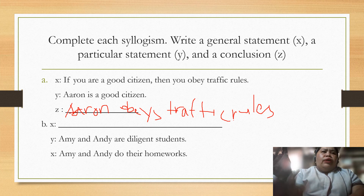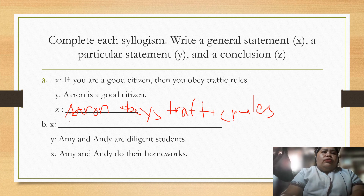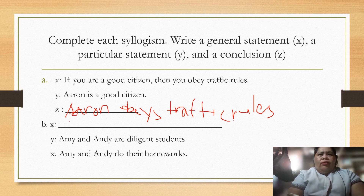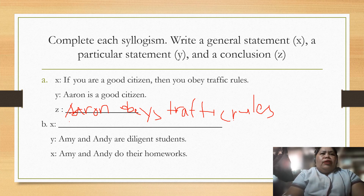Here in example B, Amy and Andy are diligent students — that is the particular statement — and the conclusion is: Amy and Andy do their homework. So the general statement would be: if Amy and Andy are diligent students, then they do their homework.